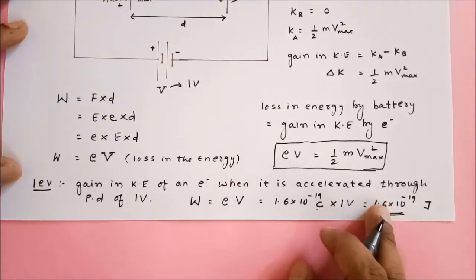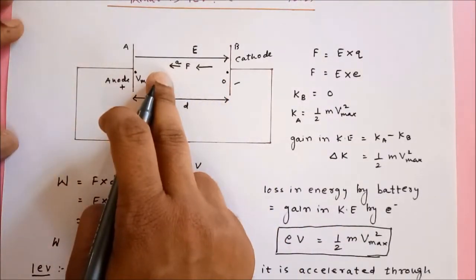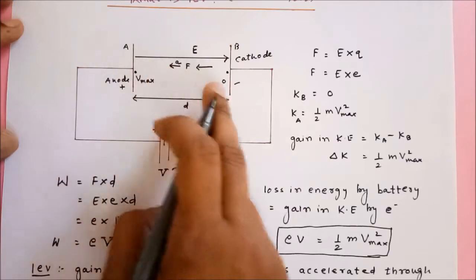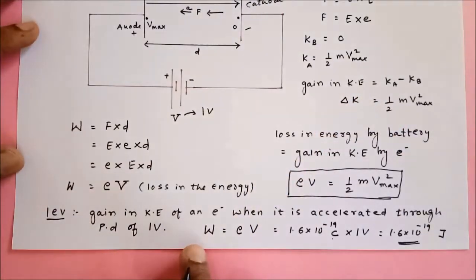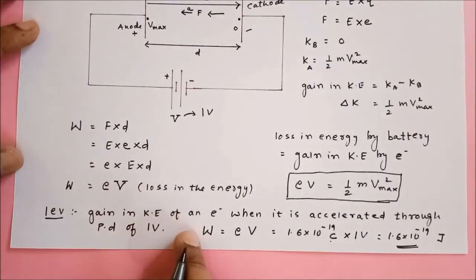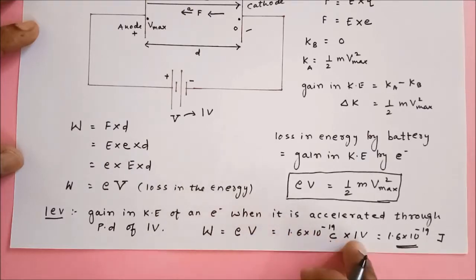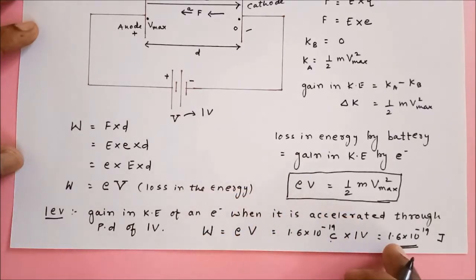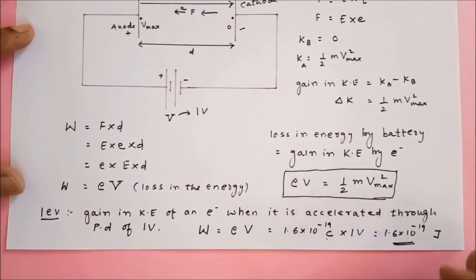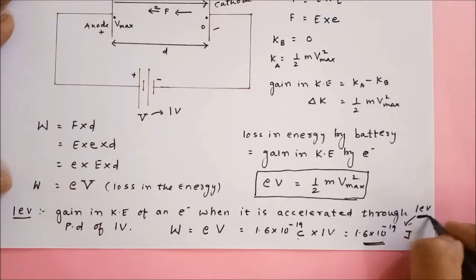This is what is called one eV. One eV means the gain in kinetic energy when an electron is accelerated through a potential difference of one volt. So the work done by the battery — or the loss in energy by the battery — is equal to eV, where e is the charge of an electron. If V is kept as one volt, then this work done or loss in energy is said to be one eV. So 1.6 × 10⁻¹⁹ joules is itself said to be one eV.